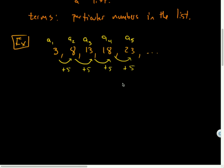So if I wanted to find out what the a sub six is, what would a sub six be? Maybe 23 plus five, which is 28. So the common difference is five, and that's denoted by the variable D.